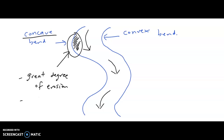If we have a great degree of erosion, that means the velocity would be great as well. We have high velocity associated with the concave bank. In addition to this, if you have undercutting taking place on the concave bank, we should bear in mind that the volume of water would be greater because you would have a deeper body of water. So, erosion is dominant, the force of the water will be great, and there will also be a greater body of water because the concave bank is deeper due to undercutting.